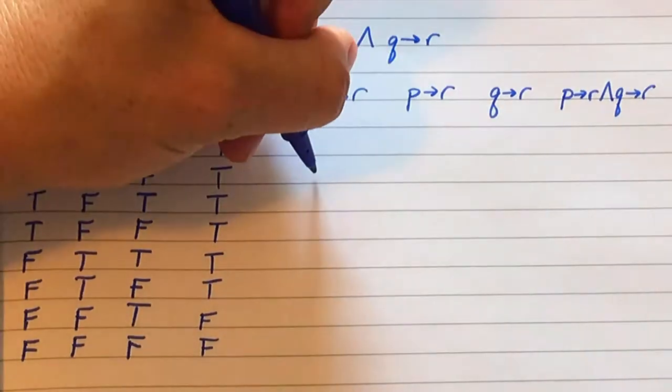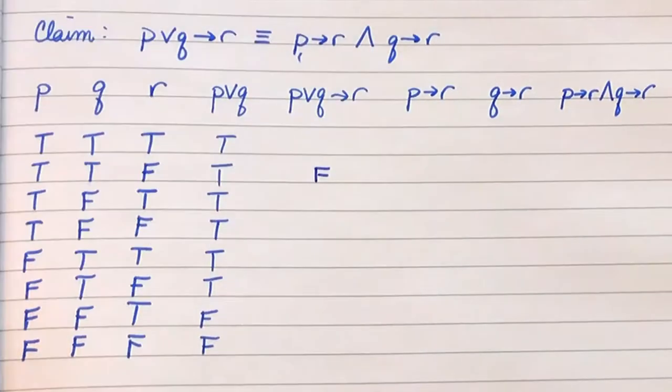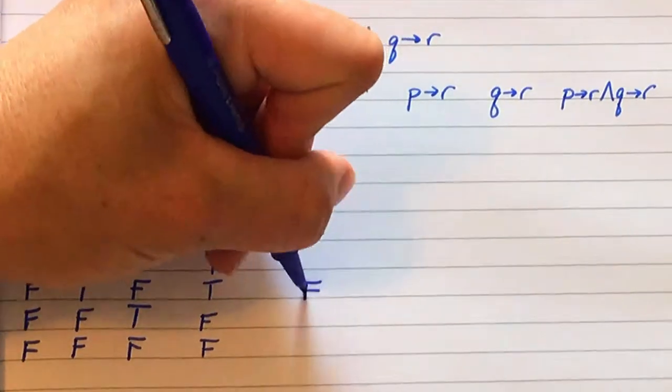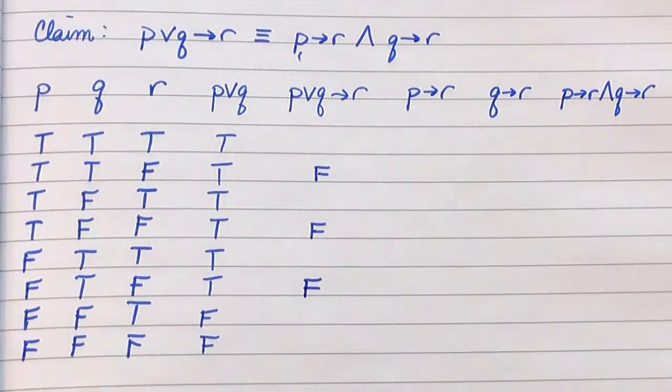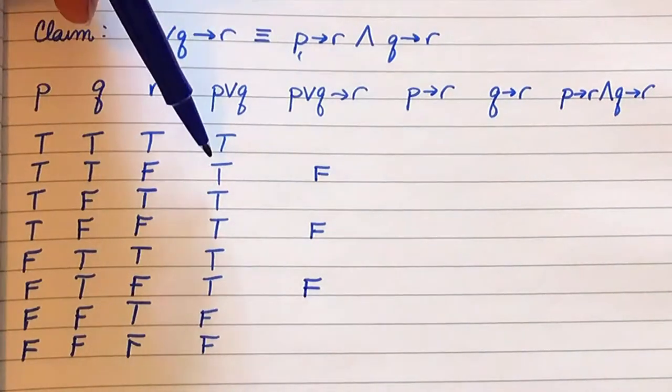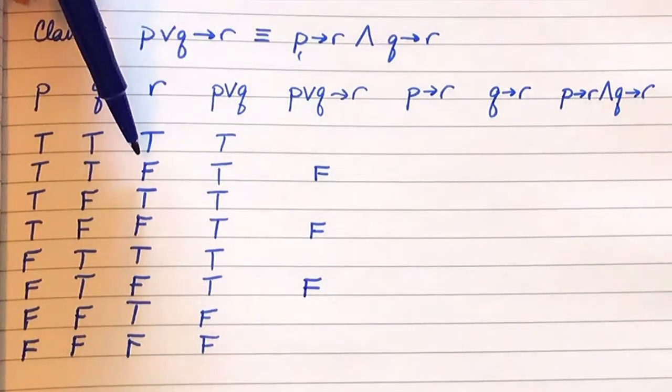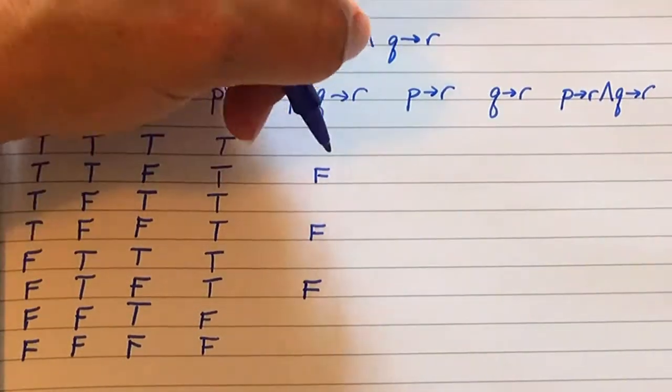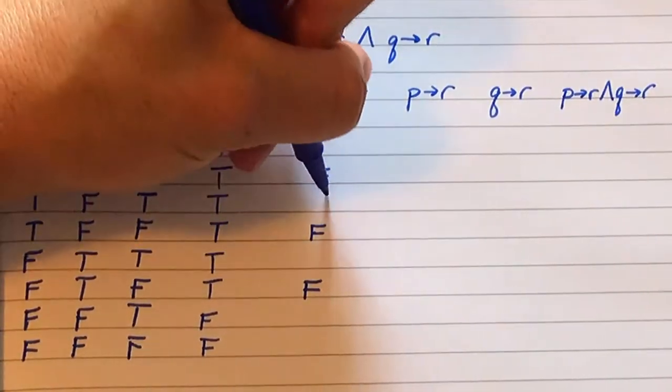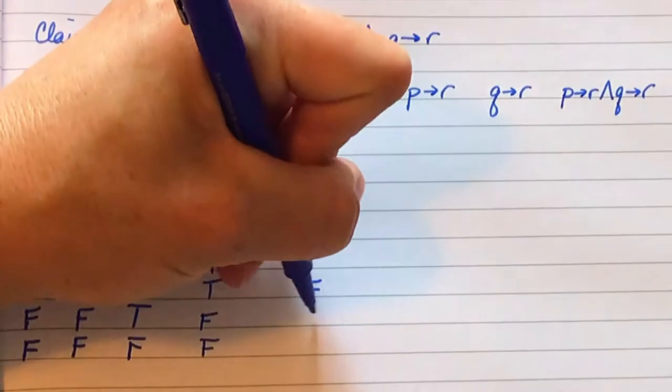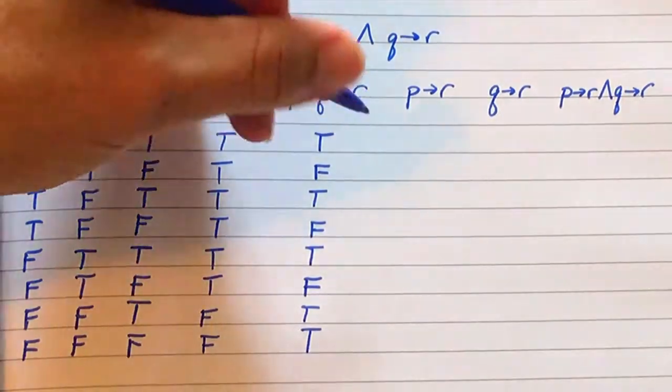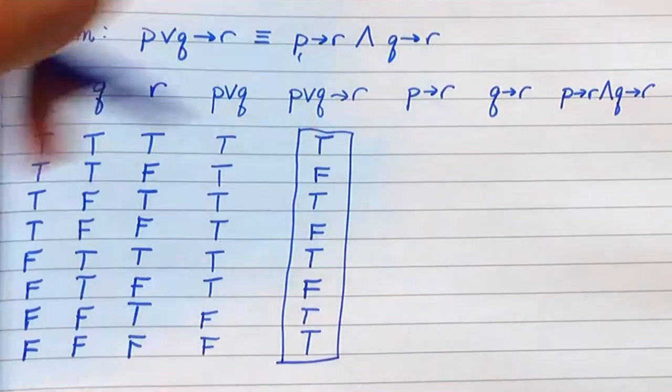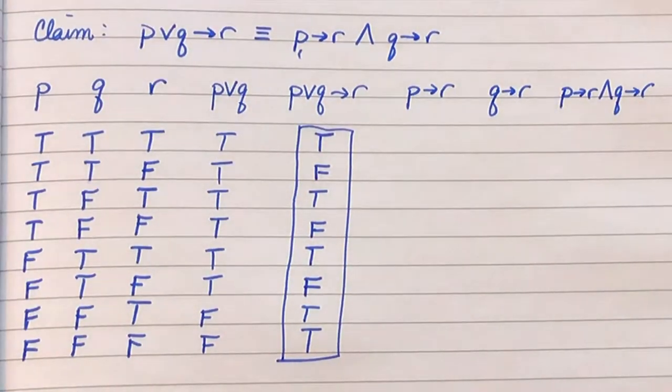So here we are going to put false, false, and false. In three out of the eight cases, we have that either P or Q is true, but the conclusion R is false, which makes this false. The other five are going to get T's. So now we are done analyzing the left-hand side.